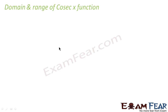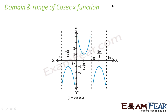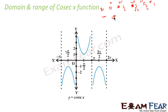Now let's find the domain and range of the cosecant function. Cosec = 1/sin, so: cosec(0)=1/0=∞, cosec(30)=1/(1/2)=2, cosec(45)=1/(1/√2)=√2, cosec(60)=2/√3, and cosec(90)=1/1=1. In the second quadrant, sine is positive so cosec will also be positive. Plotting these values gives us the cosecant graph starting at infinity.